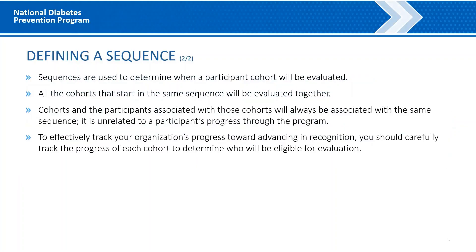Defining a Sequence, Part 2. Sequences are used to determine when a participant cohort will be evaluated. All cohorts that start within the same sequence will be evaluated together. This could be a single cohort or it could be multiple cohorts. Cohorts and the participants in these cohorts will never change sequences. Sequence assignment has nothing to do with a participant's progress through the program. To effectively track your organization's progress towards advancing in recognition, you should carefully track the progress of each cohort to determine who will be eligible for evaluation.